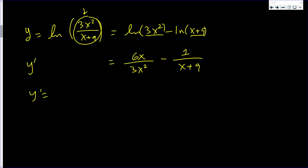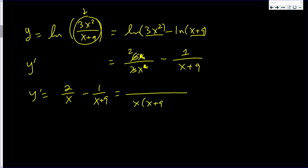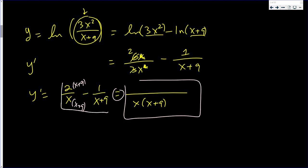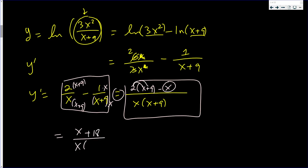Let us simplify this. 3 goes into 6 twice, and x goes into x² x times. So we have 2/x minus 1/(x+9). The common denominator is x(x+9). Multiply the first numerator by (x+9) and the second numerator by x. The numerator becomes 2(x+9) minus x, which is 2x plus 18 minus x, giving x+18 over x(x+9).